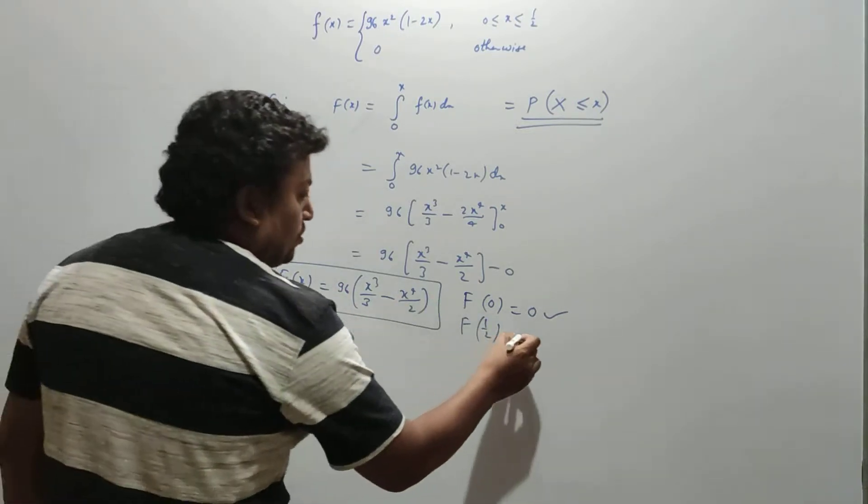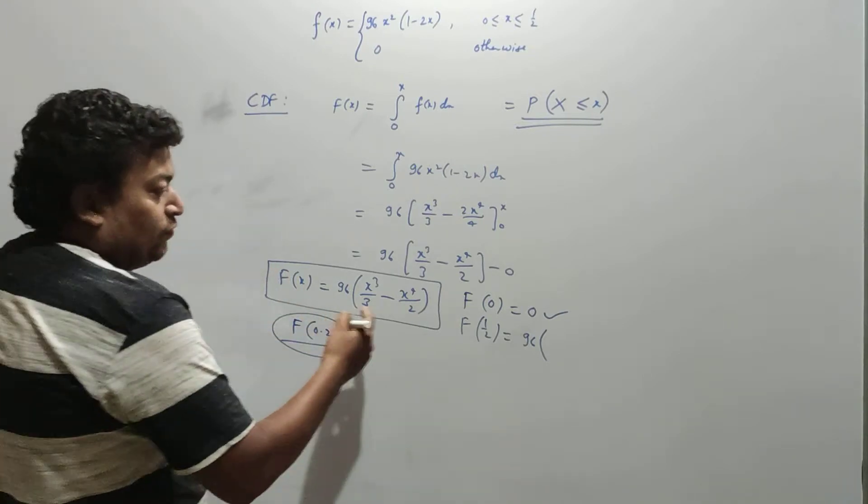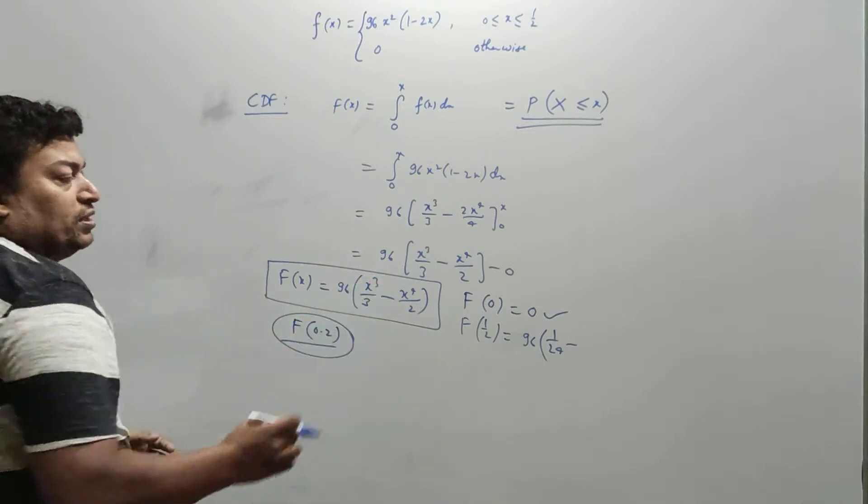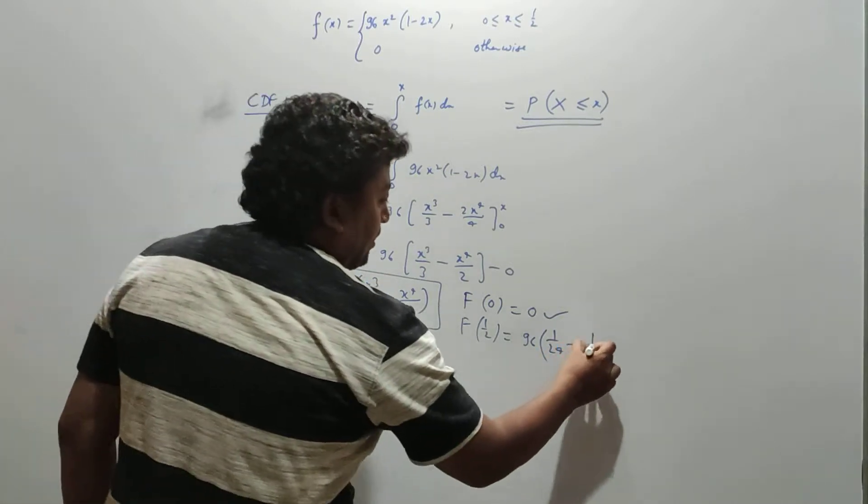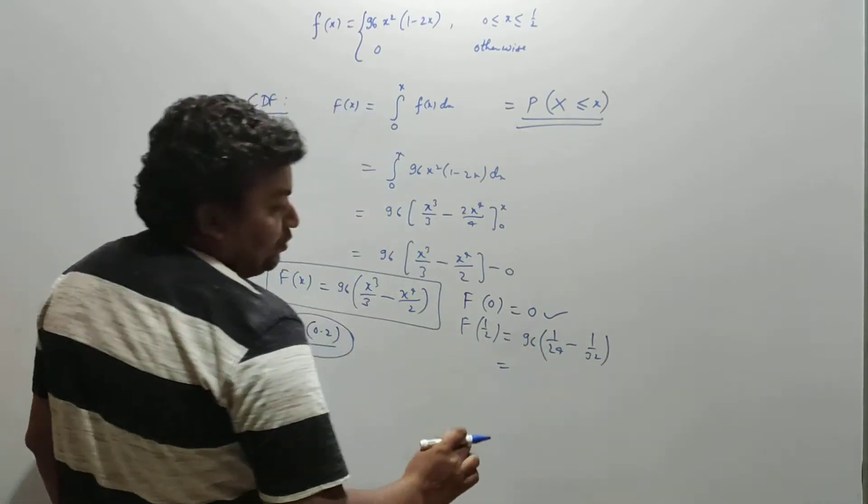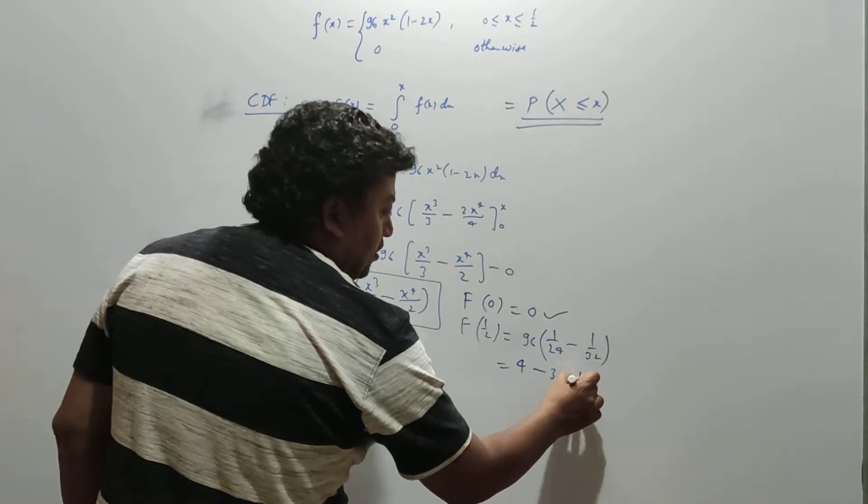And F(1/2) should equal 1. Let's check: 96 times (1/8 times 1/3 minus 1/16 times 1/2). So 96(1/24 - 1/32). Multiplying 96 inside: 96/24 is 4, 96/32 is 3, giving us 1.